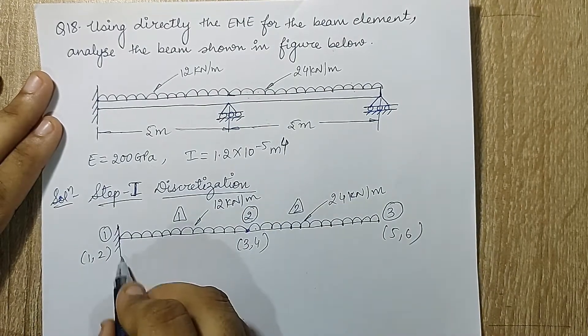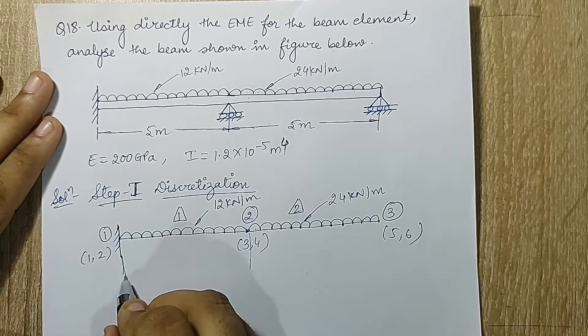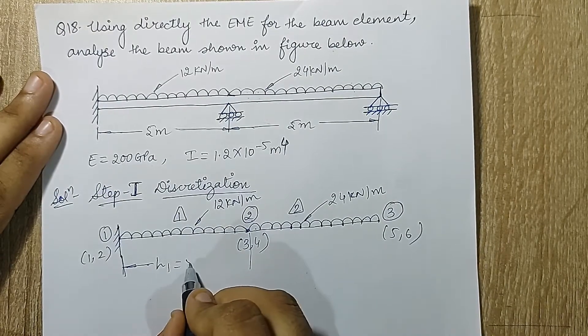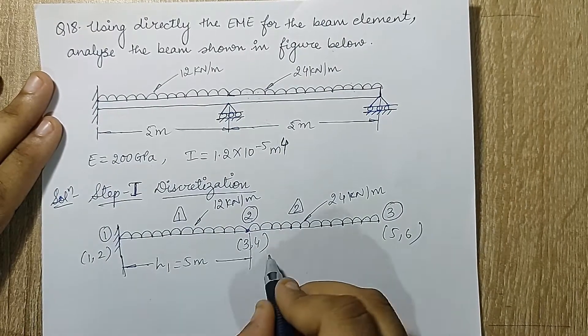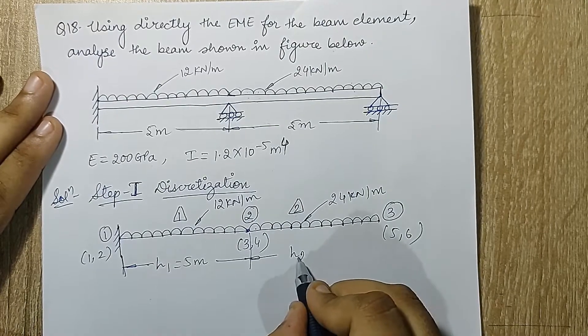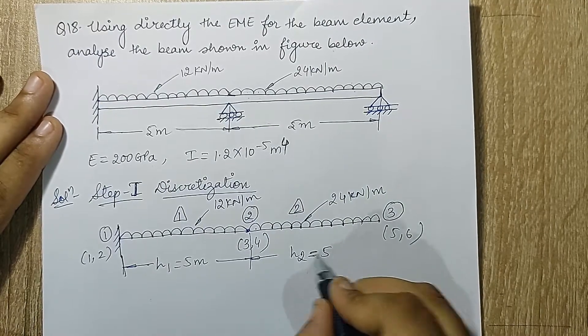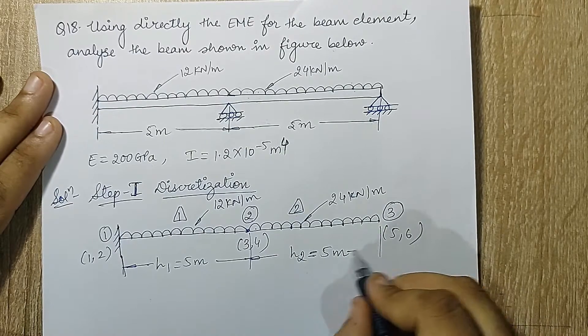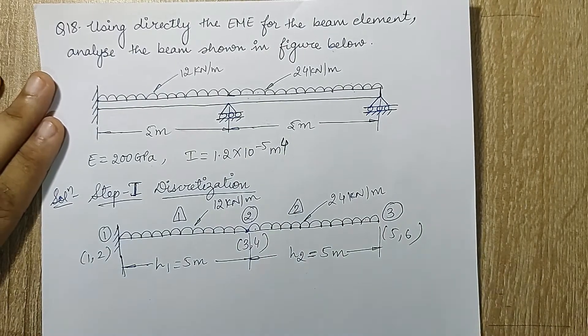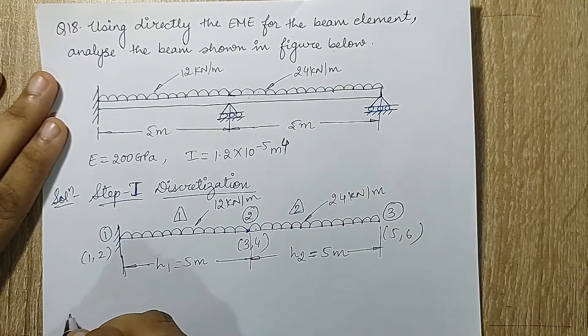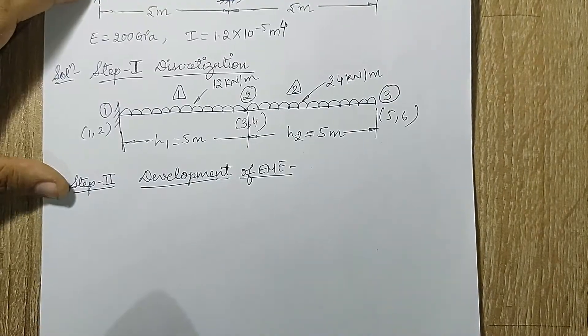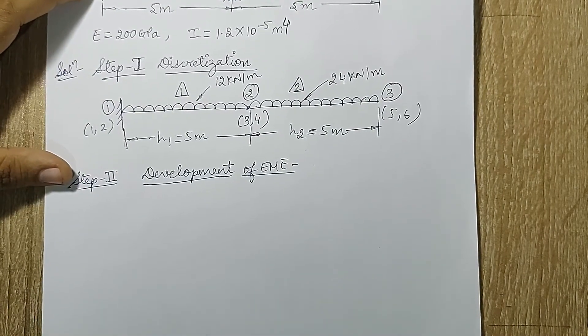This element will have length h1 5 meter and this element will have h2, you can call it as h as well, this is 5 meter. Now I will go to step 2 that is development of EME. The equation is something that you already know so I will just put up the equation for you.